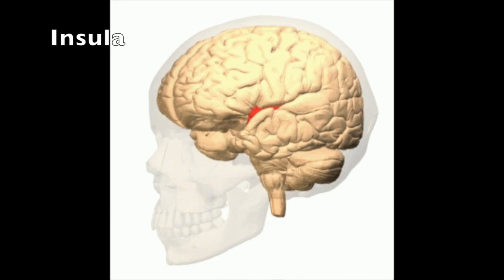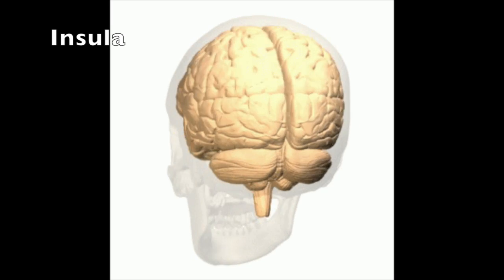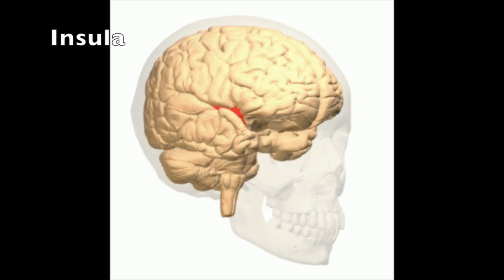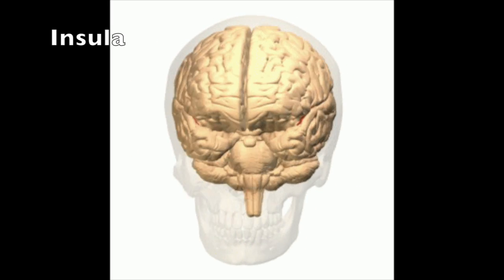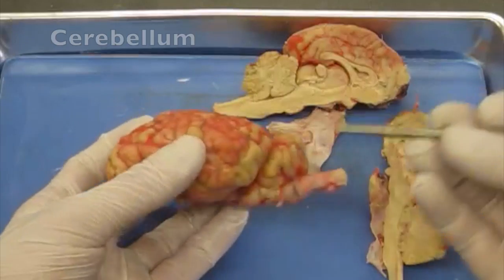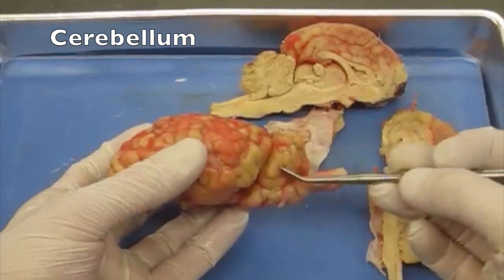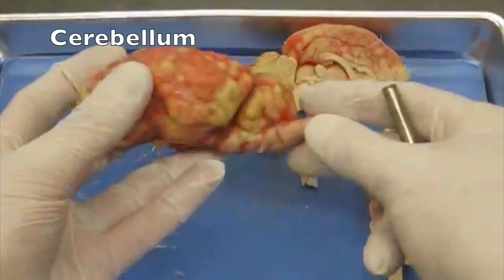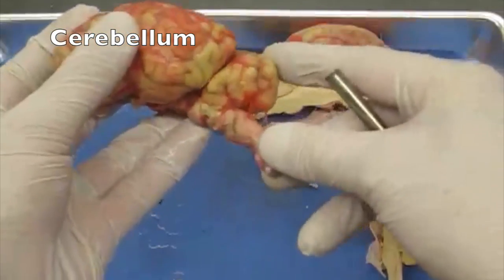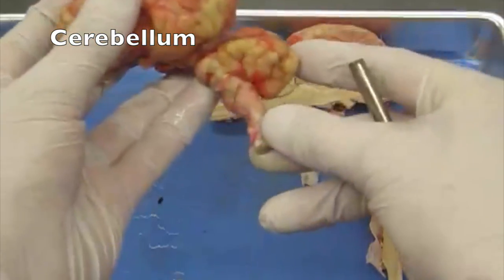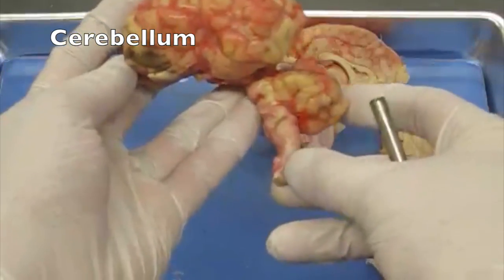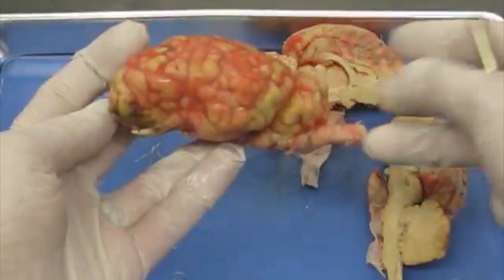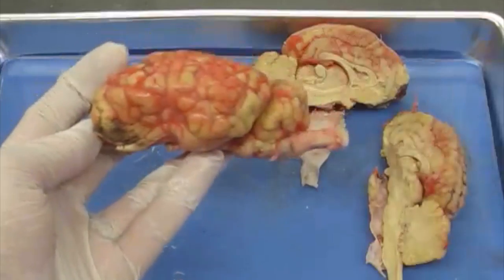The insula is a lobe that is partially obscured by the temporal, parietal, and frontal lobes. In sheep, the cerebellum lies posterior to the cerebrum, in part because sheep walk on all four feet and their vertebral column is horizontal to the ground. Humans are bipeds, and their vertebral column is perpendicular to the ground, so the spinal cord and the cerebellum are positioned differently.